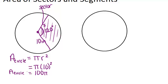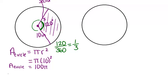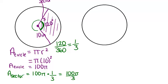But we want just the area of the sector, not of the whole circle. We know that the sector is 120 degrees out of the full 360 degrees of the circle. So the fraction of the circle that the sector is, is 120 out of 360, which is one-third. That means this sector is one-third of the circle, so its area will be one-third of the whole circle's area. We take the area of the whole circle, 100 pi, and multiply by one-third, giving us an area of 100 pi over 3 inches squared.